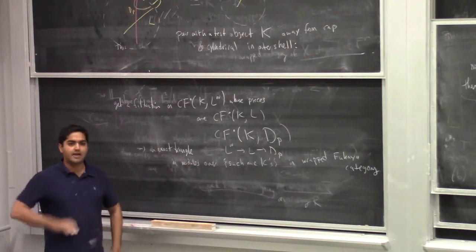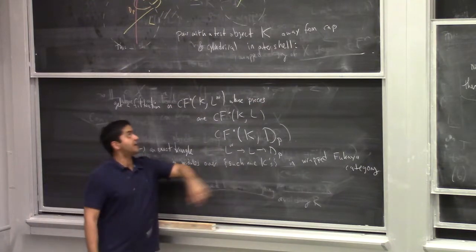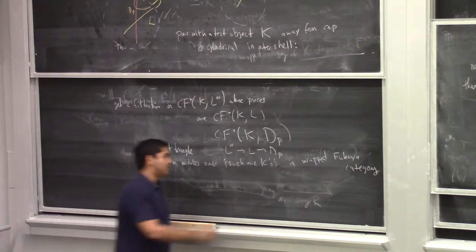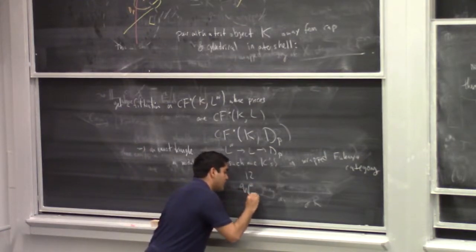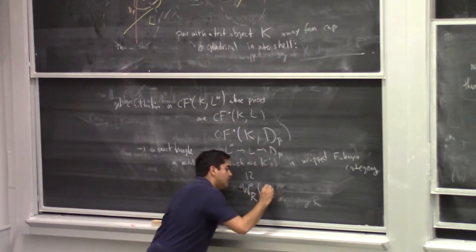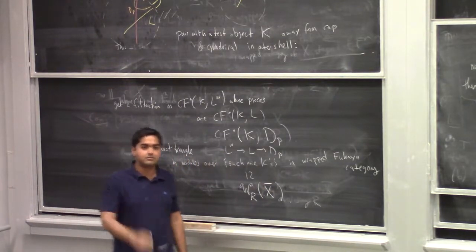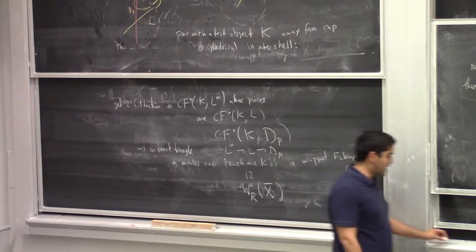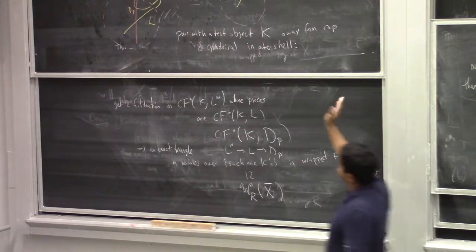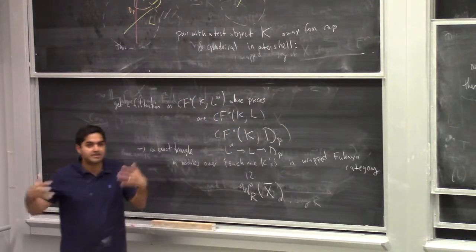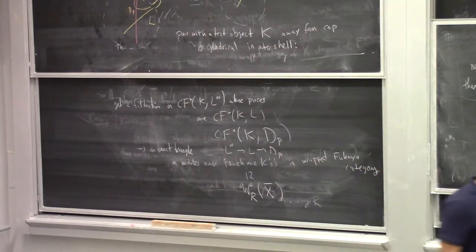I get the exact triangle in the category of modules over nice K's that avoid this region. The category of nice K's that avoid this region is quasi-equivalent to the full category, because I can make any Lagrangian avoid that region by some isotopy avoiding the stop. So I'm done.